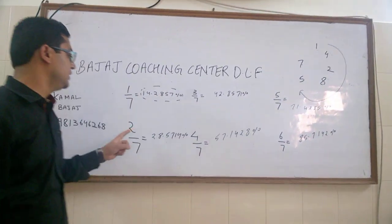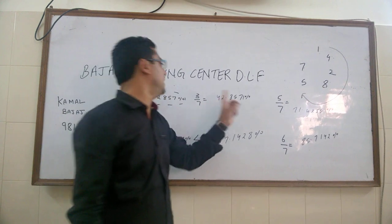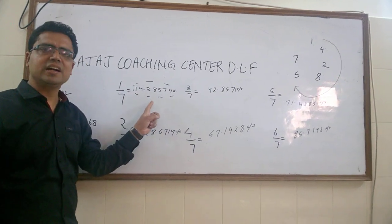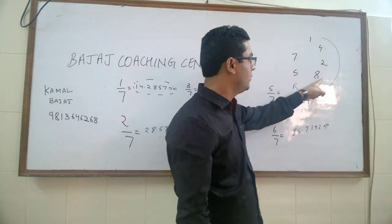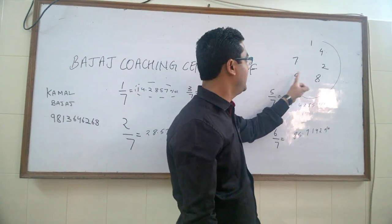When we write two by seven, this is double of one by seven. 14 double is 28. Then our answer for two by seven is 28.5714.